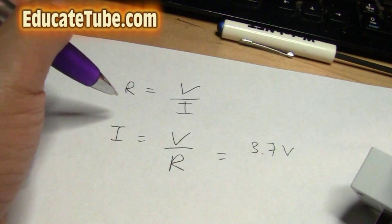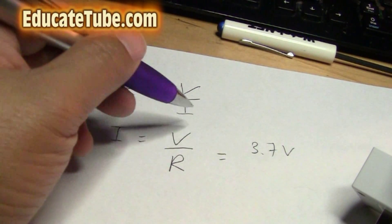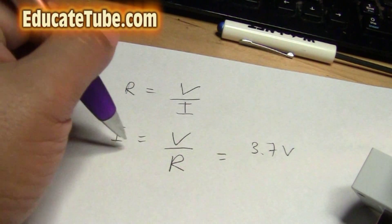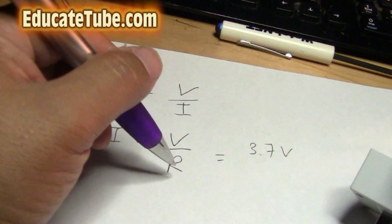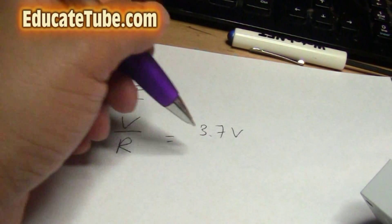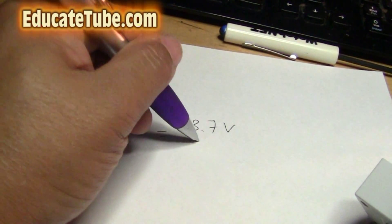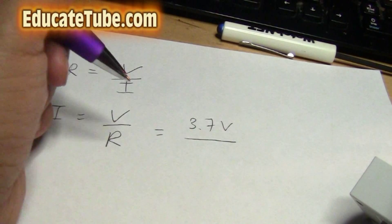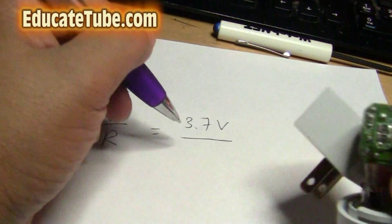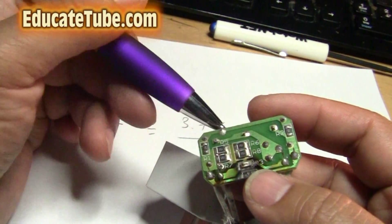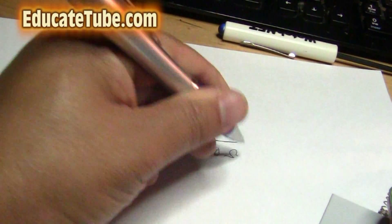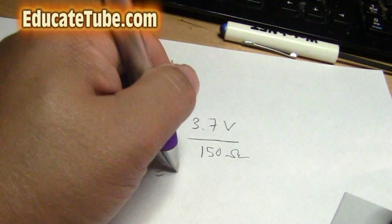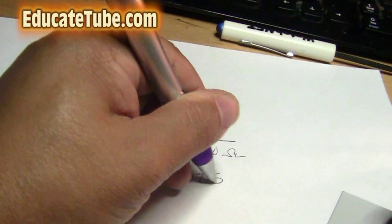So using this equation here, resistance equal to volt over current, I rearranged the equation so it's I equal to voltage over resistant. So for example, if I use a lithium battery 3.7 volt. And let's say I have a resistor, which in this case I have four of them. I'm going to use one of them right here, which is 150 ohms. And then if we calculate it, we get about 0.025 approximately.